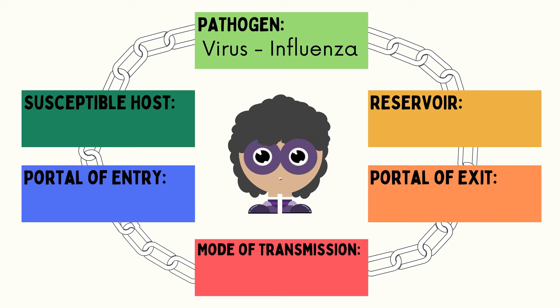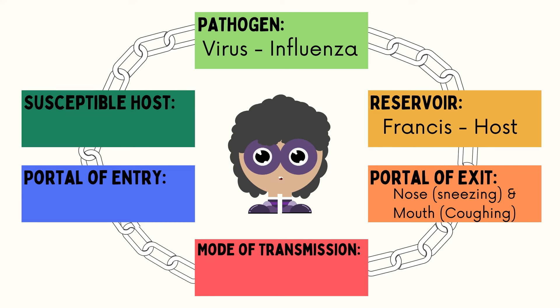The first link is pathogen, which refers to germs. Francis had influenza, and influenza is caused by a virus — so the pathogen is the virus, not influenza. Influenza is the actual disease. Next is reservoir: the virus lives in the body of Francis, making him the reservoir. He kept sneezing and coughing while playing. When you sneeze, droplets may go out through your nose; when you cough, droplets can go out through your mouth. That is why it is important to cover your nose and mouth when coughing or sneezing.